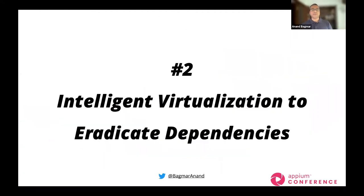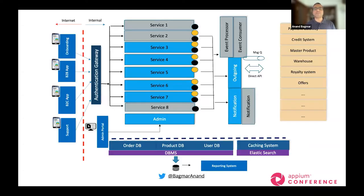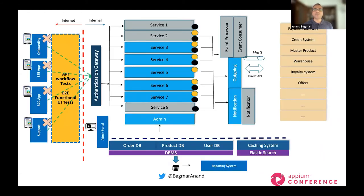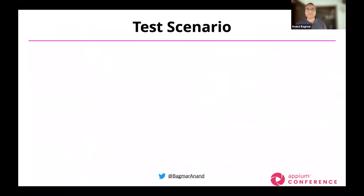The second technique is intelligent virtualization to eradicate or remove external dependencies. Let's take an example using the same architecture diagram. For our end-to-end or automated tests, we remove the actual client application and implement the simulation of those scenarios — either using end-to-end functional automation tools or API workflow tests. Let's now take a concrete example of a test scenario you would want to automate.